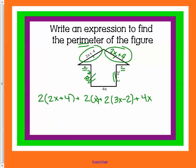Okay, so here's what I did. I doubled each one of these. So 2 times 2x is 4x, and 2 times 4 is 8. I doubled this one and got 2x. I doubled this one and I got 6x minus 4, and then I just left the 4x. Now we're going to combine our like terms.